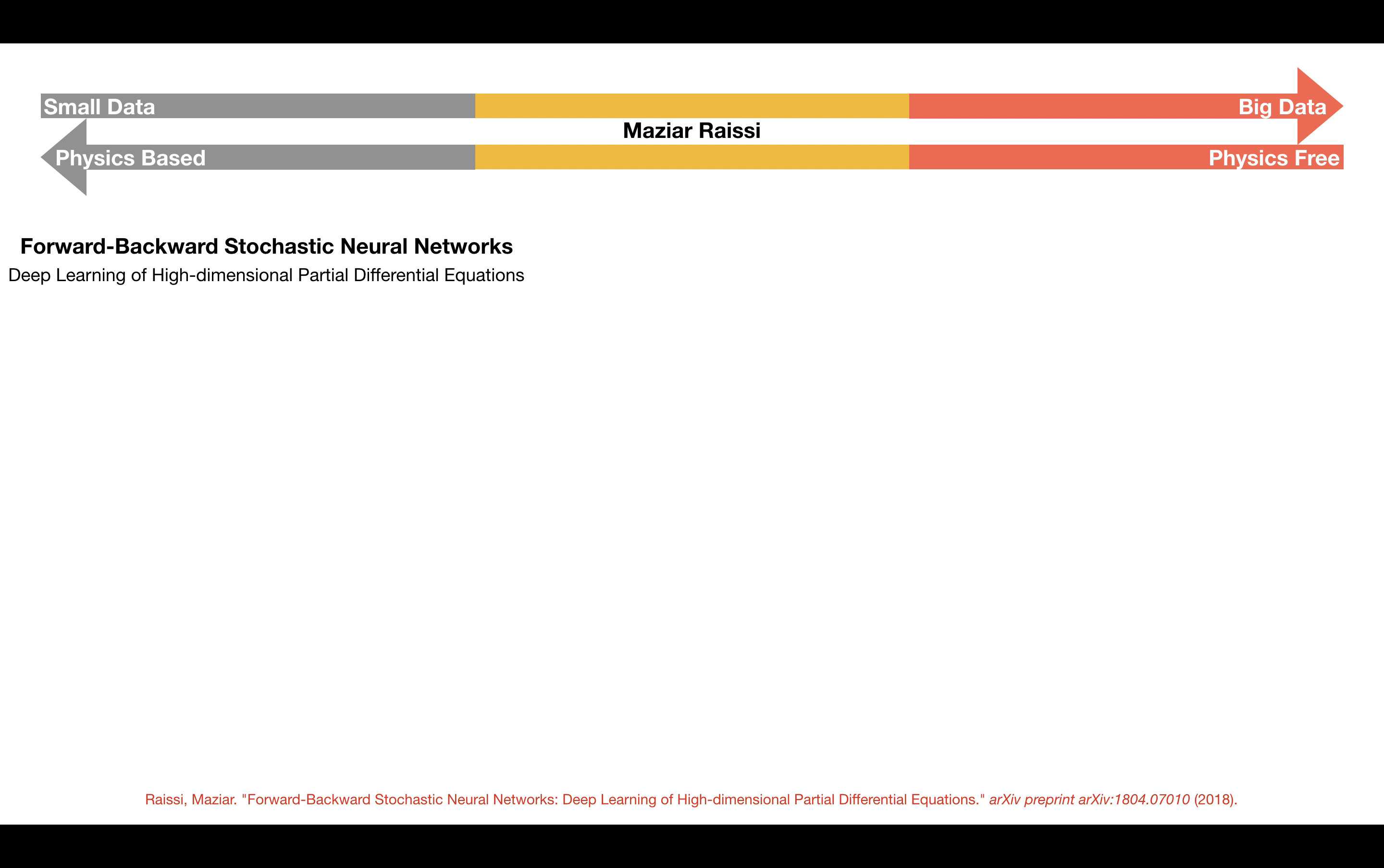For training this neural network, we are going to leverage the fundamental relationship between high-dimensional PDEs and forward-backward stochastic differential equations. Here, independent realizations of the underlying Brownian motion will act as training data.